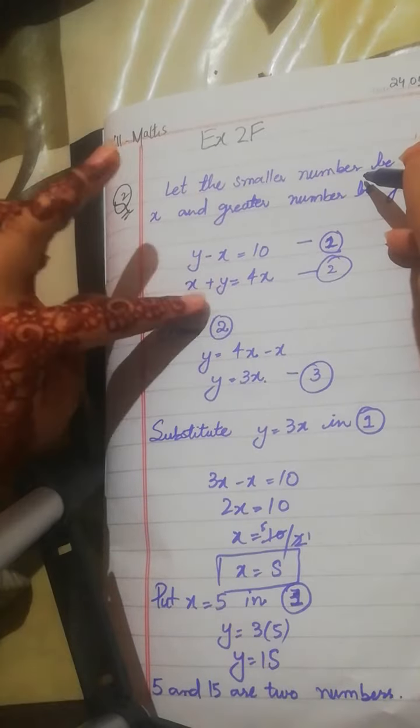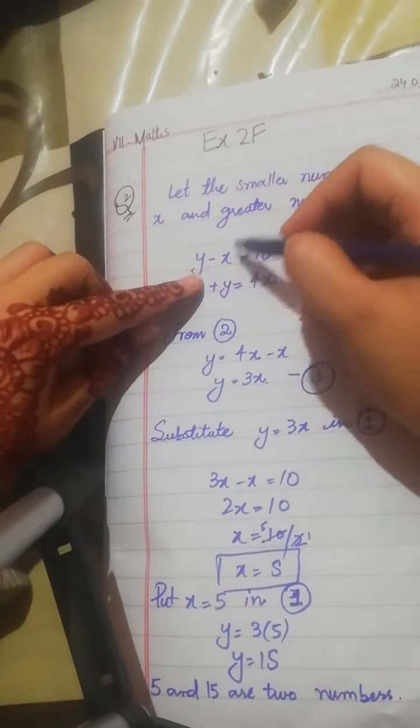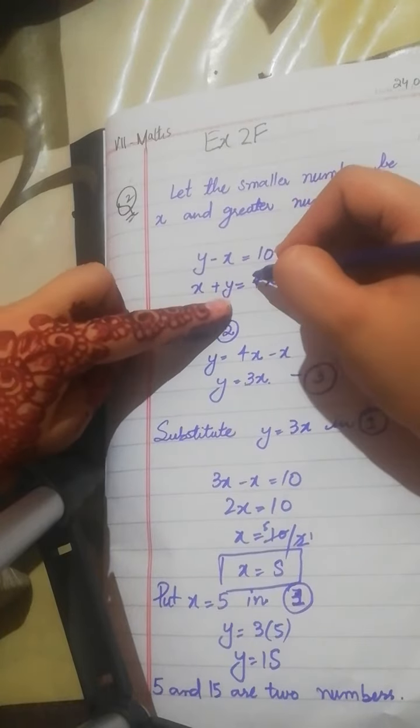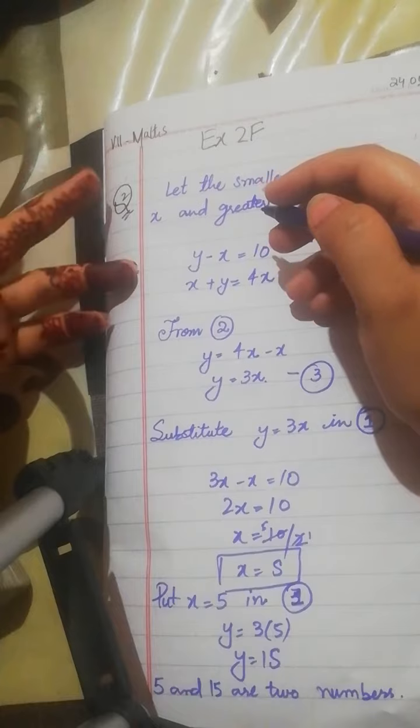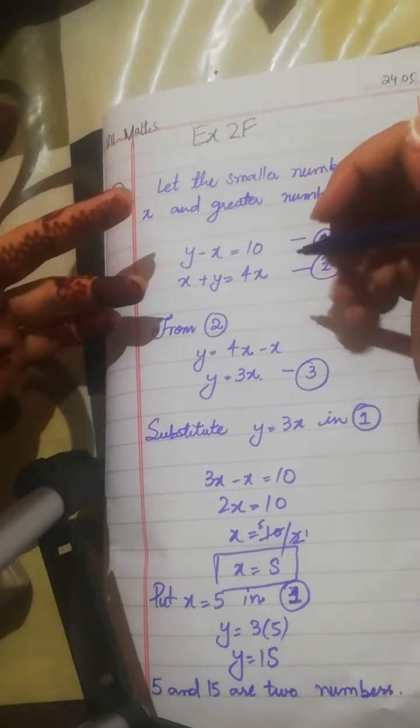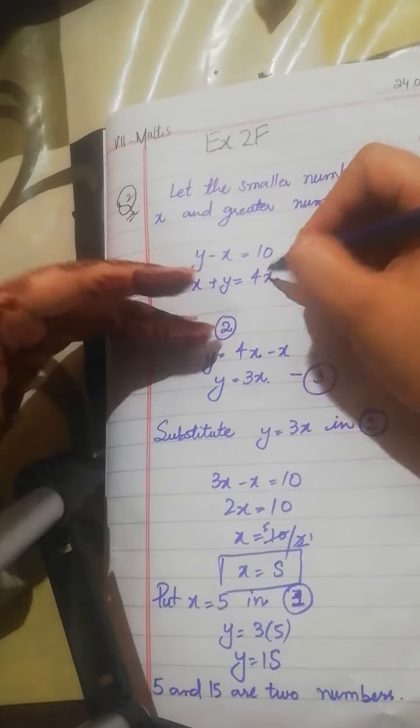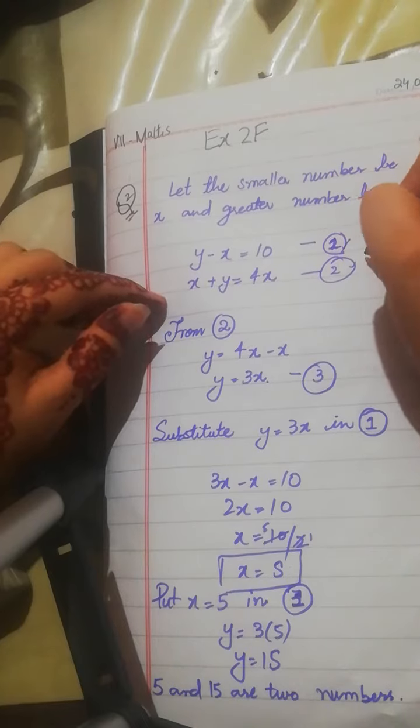The difference between two numbers is 10. The sum is equal to 4 times x. 4 times means 4 multiplied by x, that means 4x. This is equation number 1. This is equation number 2.